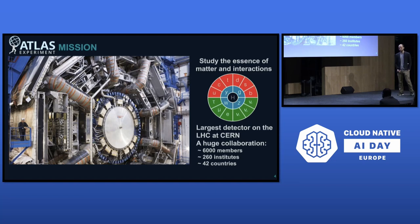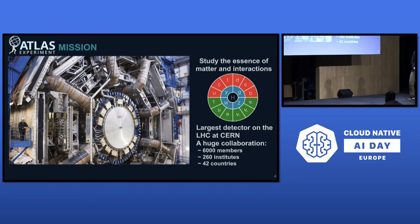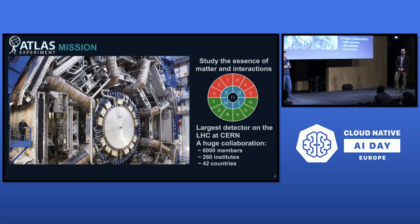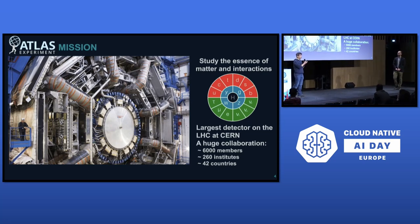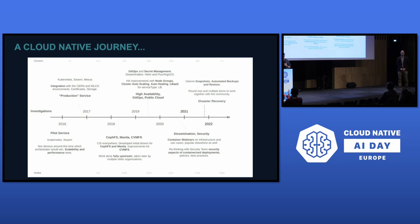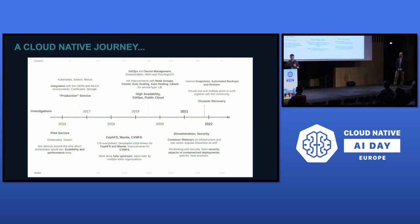Now we'll break the talk into two parts. I'll start by talking about infrastructure and focus on the journey we had to get here and the challenges we are facing. Then Maxence will talk about the physics use case at the end. Looking at what we've been building at CERN — we've given many talks at this conference and others — we had a long journey to get to where we are.